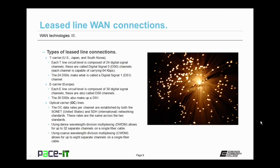In the United States, Japan, and South Korea, there are T-carrier lines. Each T-line is composed of 24 digital signal channels. These are often called Digital Signal Zero channels, or DS0 channels. Each channel is capable of carrying 64 kilobits per second. The 24 DS0's make up what is called a DS1 channel.